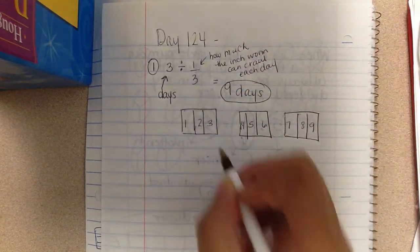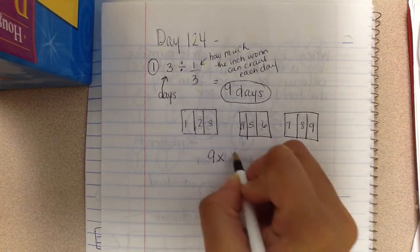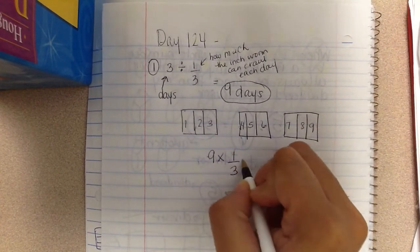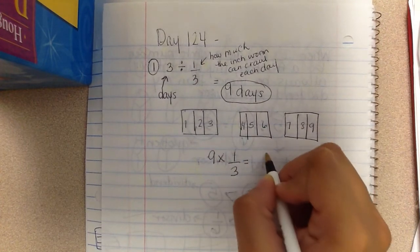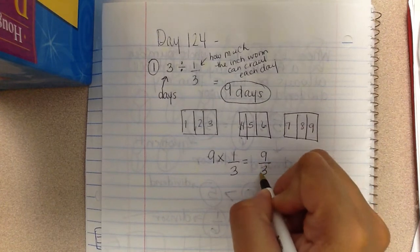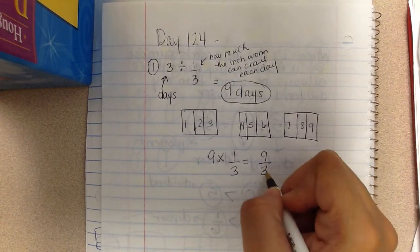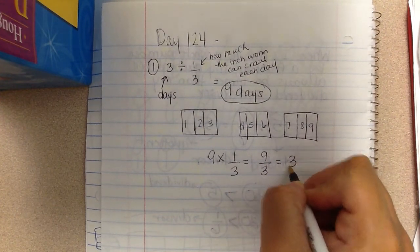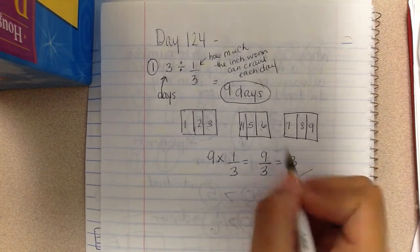I can check that by saying nine times one third, doing the reverse operation. And what does that equal? That equals nine thirds. Nine divided by three equals three wholes. So my answer is correct because my three matches here.